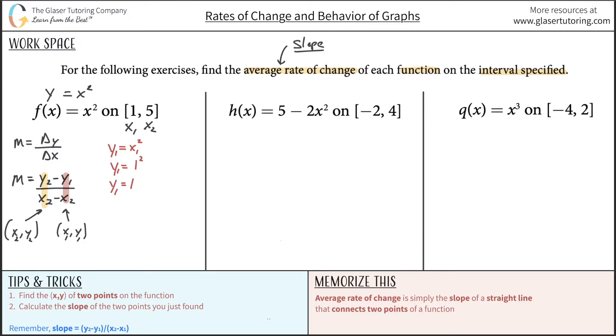So basically my coordinate, one of my coordinates now is going to be (1,1). That was the X1 value and the Y1 value that we found. So this is X1, Y1.